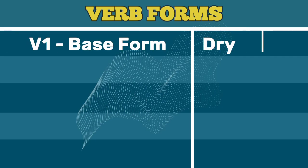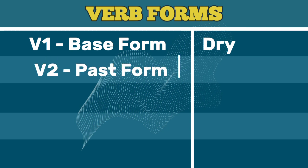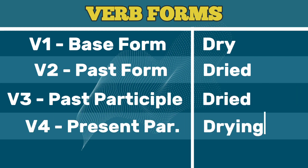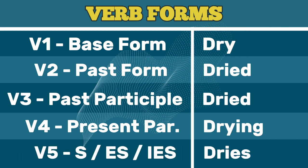V1 base form: dry. V2 past form: dried. V3 past participle: dried. V4 present participle: drying. V5 third person singular (s/es/ies): dries.